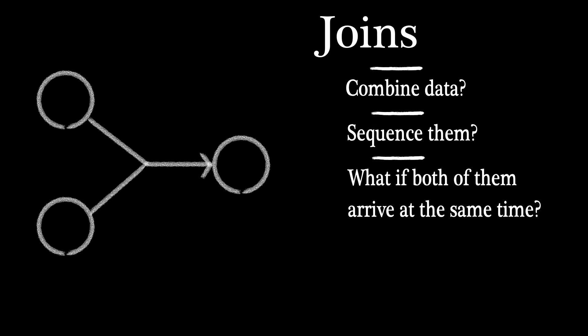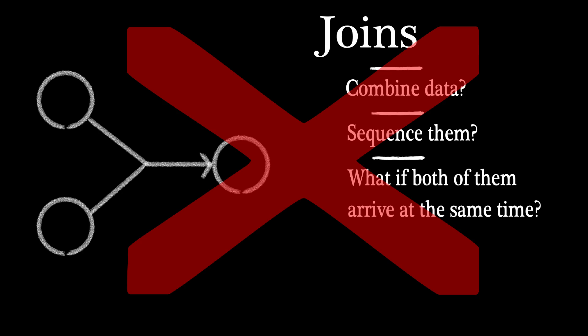The choice of data packet representation determines if joins and splits of links are allowed. Some questions to ask yourself about joins: Do you combine the data packets from both links? Do you sequence the data? And what if two packets arrive at the same time? Or we could just disallow them.